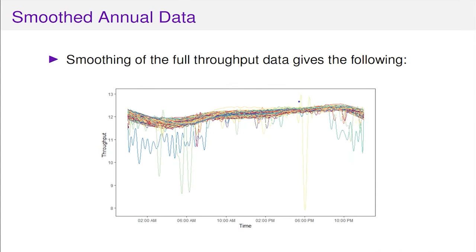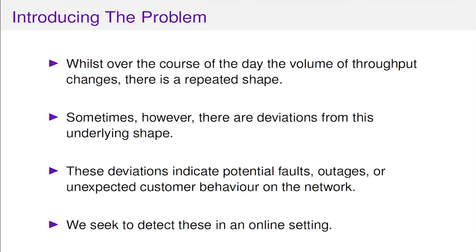If you look at it from a full perspective, that very colourful plot suddenly looks a bit more meaningful. We've got this general structure, and then some days where it looks like something has gone very wrong. We've moved the data so we get this kind of structure where we can see some days going wrong and plenty of days going right. So to introduce the problem: over the course of the day the volume of throughput changes but there's a repeated shape, and sometimes there are deviations from that underlying shape.